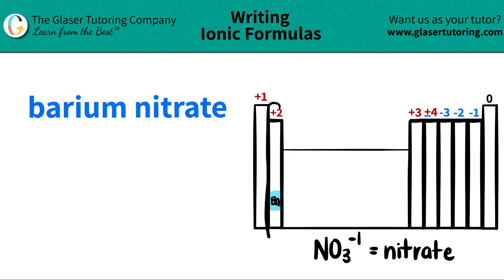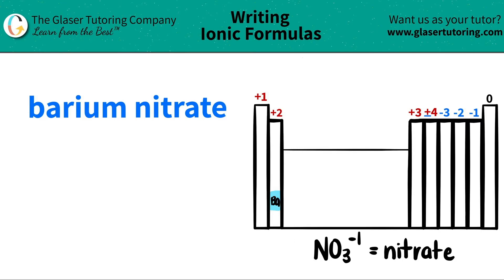All group 2 elements are alkaline earth metals, and they always have an oxidation state of +2. They lose 2 electrons. So I'm just going to write Ba with a +2.